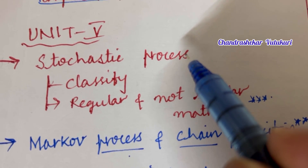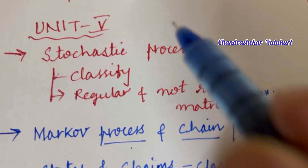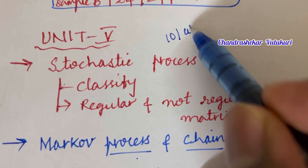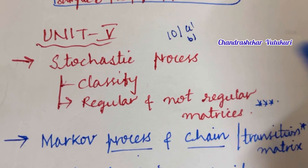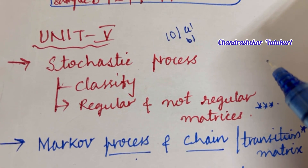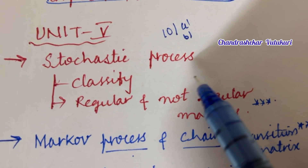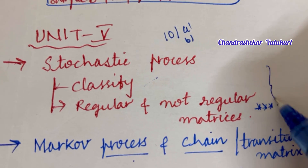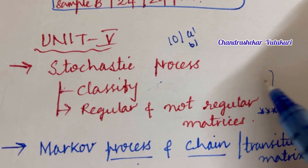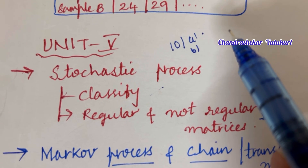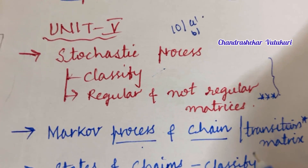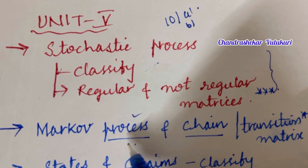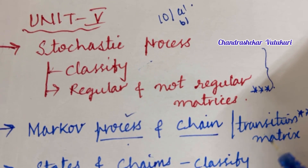The first question I have taken here is from Unit 5 — that is the 10th question. You'll be getting questions 10A and 10B, and 11A and 11B from Unit 5. Stochastic process, classify them, and regular and non-regular matrices — this is one of the important questions in 10A. Markov process and chain is said to be the topmost question; related to Markov process, you are going to get one question for sure.